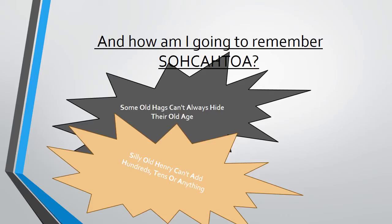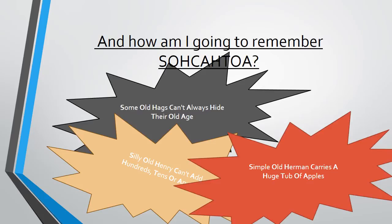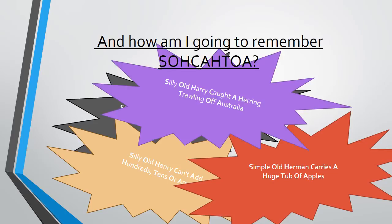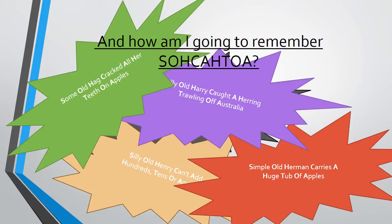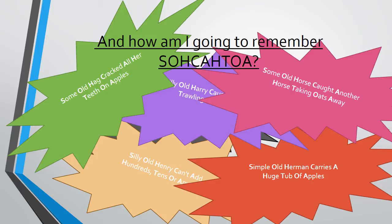Silly old Henry can't add hundreds, tens or anything. Simple old Herman carries a huge tub of apples. Silly old Harry caught a herring trawling off Australia. Some old hag cracked all her teeth on apples. Some old horse caught another horse taking oats away.